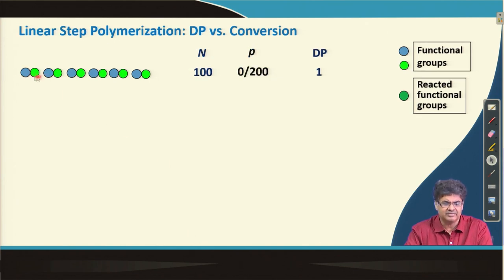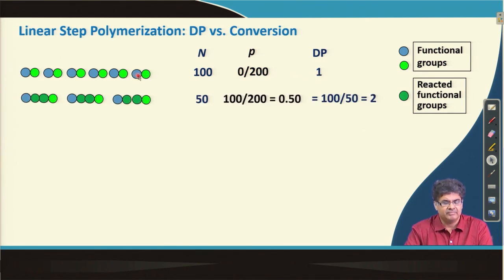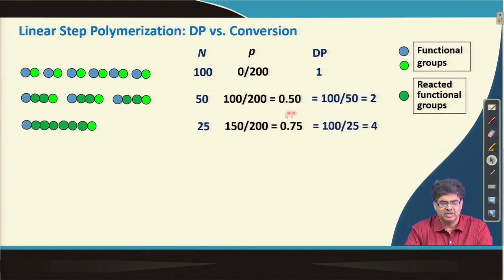Moving to a larger example with 100 AB-type molecules (200 functional groups): at the start, P = 0 and degree of polymerization = 1. If each pair of molecules reacts to form dimers, we have 50 molecules, 100 functional groups reacted, P = 0.5, and average degree of polymerization = 2. If all dimers react to form tetramers, we have 25 molecules, 150 functional groups reacted, P = 0.75, and degree of polymerization = 4.